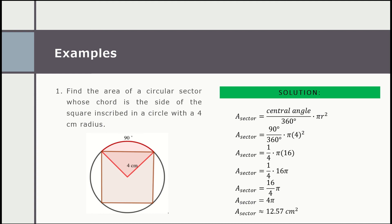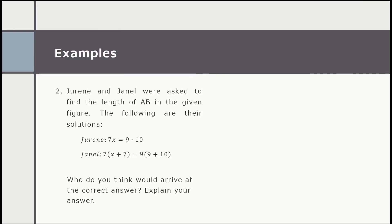Jurene and Janel were asked to find the length of AB in the given figure. The following are their solutions. For Jurene, we have 7x equals 9 multiplied by 10. And for the solution of Janel, we have 7 multiplied by the quantity (x + 7) equals 9 multiplied by the quantity (9 + 10).